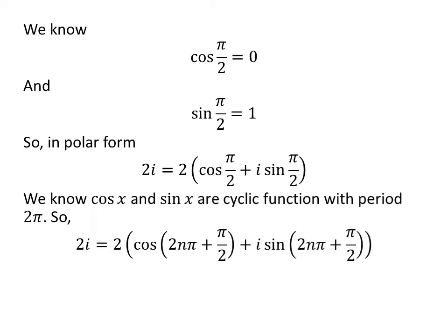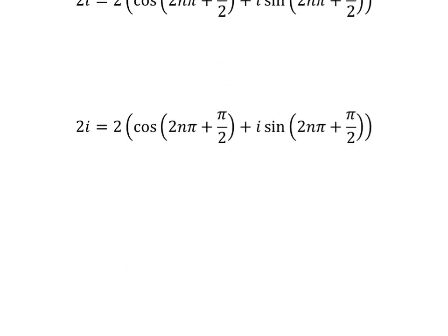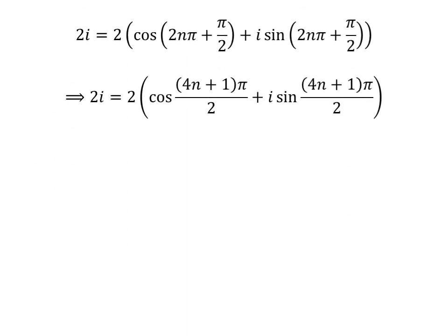We know cosine and sine functions are cyclic with period 2 times pi. So, 2 times iota is equal to 2 times cosine of (2n times pi plus half of pi) plus iota times sine of (2n times pi plus half of pi), where n is an integer. Further simplification gives 2 times iota equal to 2 times cosine of (4n plus 1) times pi upon 2, plus iota times sine of (4n plus 1) times pi upon 2.